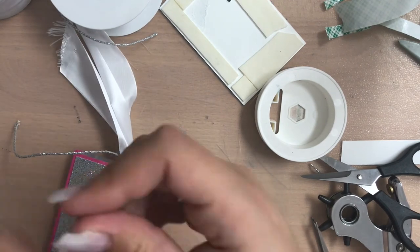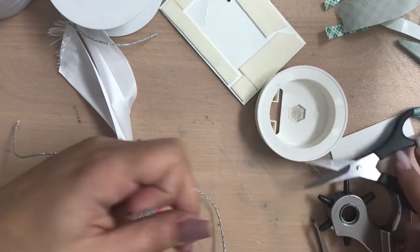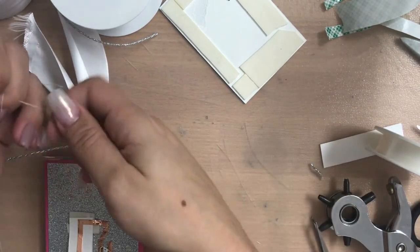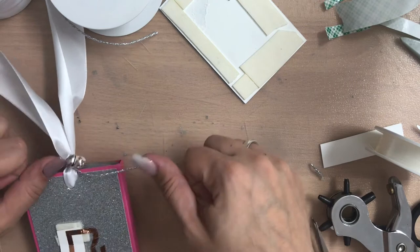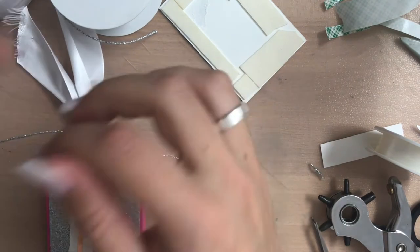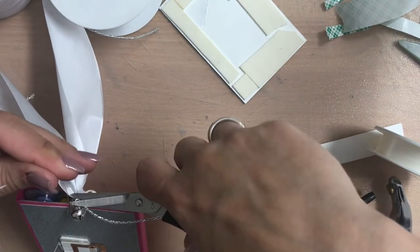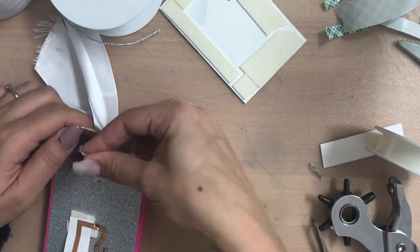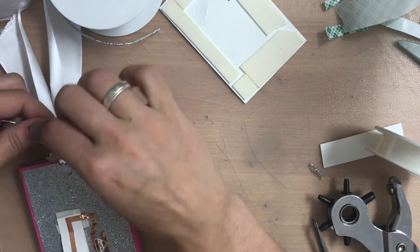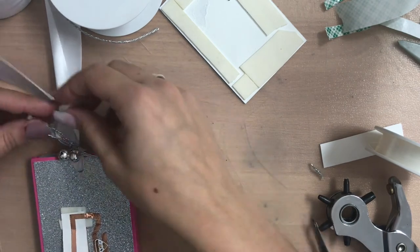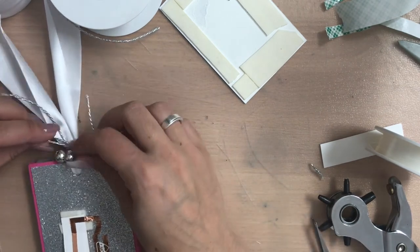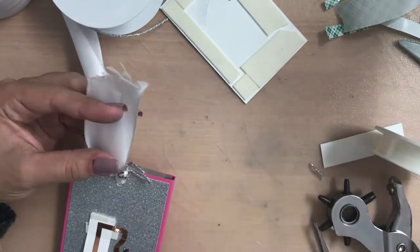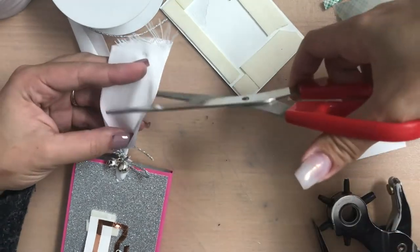I use some ribbon and put it through the holes and put my advent calendar in. Now later you only have to pull on the ribbon and then the advent calendar will come out and you will see it right in the middle.